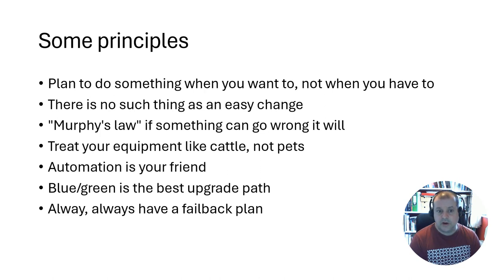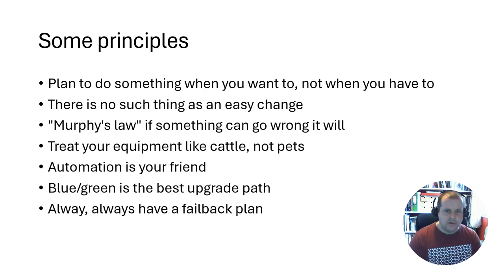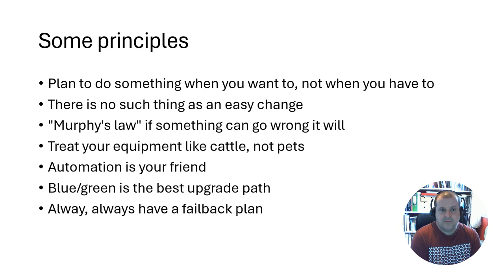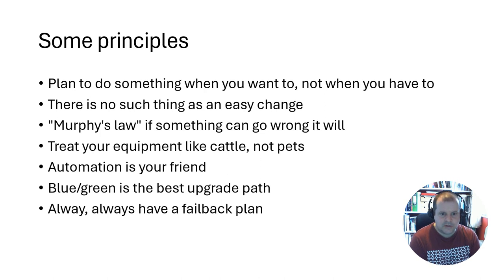If you do screw something up, just kill it off and create a new one. There's an upfront investment in time, learning, and sometimes money, but it really helps eliminate the mistakes that happen when you treat servers like pets and make random undocumented changes. Fifth: automation is your friend — learn to automate as much as you can. Sixth: blue-green is the best upgrade path — run the new one alongside, switch over, and if something goes really wrong, switch back easily with no risk.